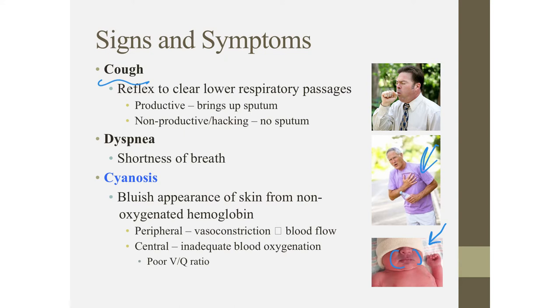This can either be peripheral in nature, meaning some sort of vasoconstriction is limiting the blood flow, causing symptoms of cyanosis, or it can be central, meaning that the actual blood oxygenation as a result of movement of gases across the respiratory barrier is altered. We refer to that as the ventilation-perfusion ratio, or VQ ratio.